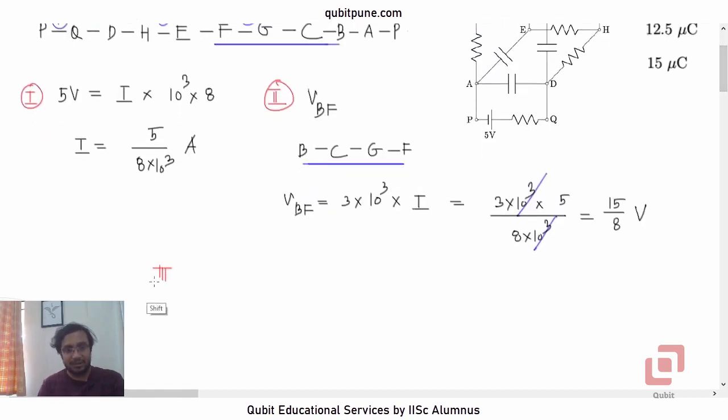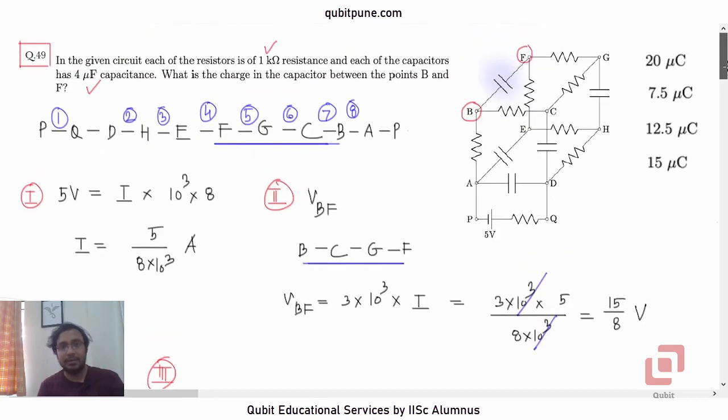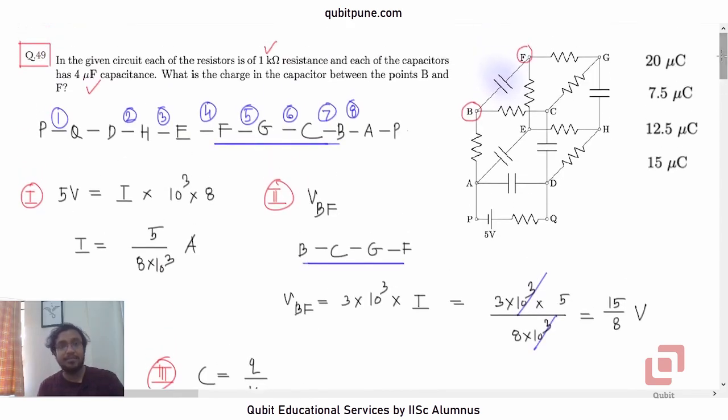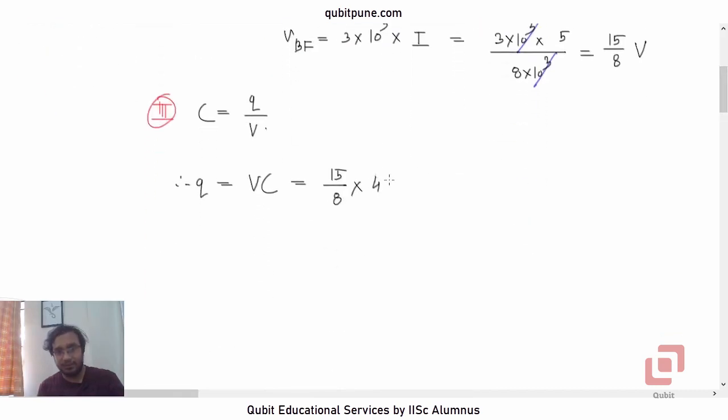What are we asked? We are asked to find the charge. Now what is the main formula in capacitance? C, the capacitance is Q by V. Correct. So Q must be CV or VC. How much is V? That's VBF for us, that's 15 upon 8. What is the capacitance? Capacitance is 4 microfarad. Capacitance is 4 microfarad. So, into 10 raised to negative 6, microfarad.